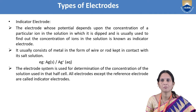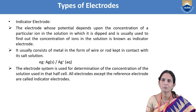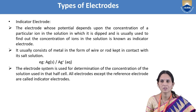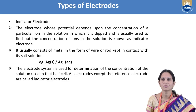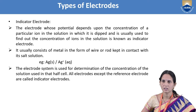The indicator electrode usually consists of the metal in the form of a wire or rod kept in contact with its salt solution. For example, a silver wire dipped in silver nitrate solution. This electrode system is used for determination of the concentration of the solution used in the half cell. All electrodes except the reference electrode are called indicator electrodes.